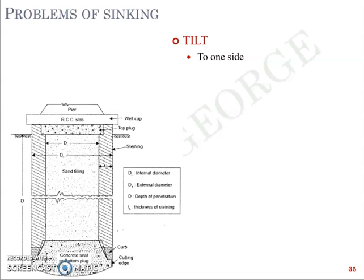The maximum allowable tilt as per standard practice is 1/80 to 1/60, which means you can have an allowance of 1 meter in every 60 meters of depth installed. That is the maximum permissible value for how much the well may get tilted.